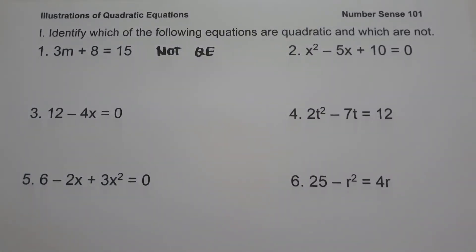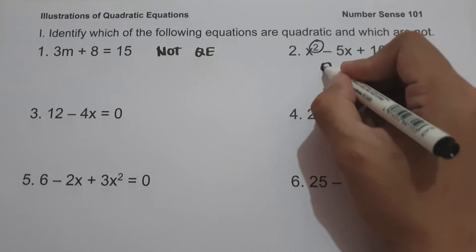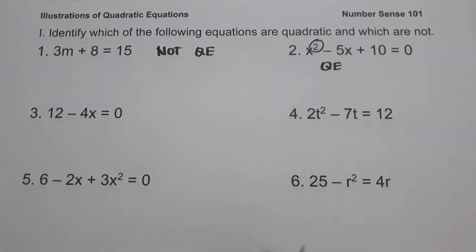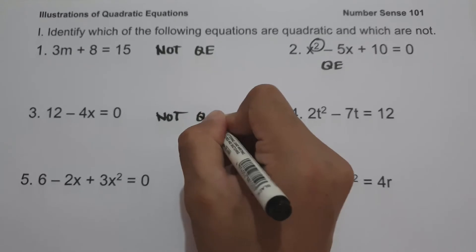On number two, we have x squared minus 5x plus 10 equals zero. Since the highest exponent is two, this is a quadratic equation. On number three, we have 12 minus 4x equals zero. Number three is a linear equation and the highest exponent is one, so this is not a quadratic equation.